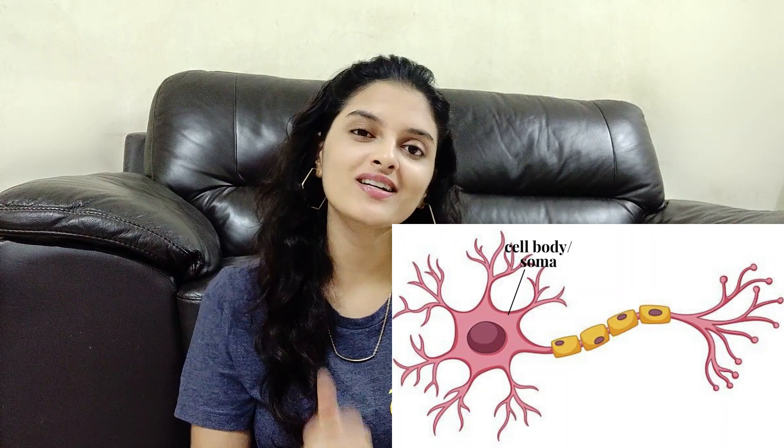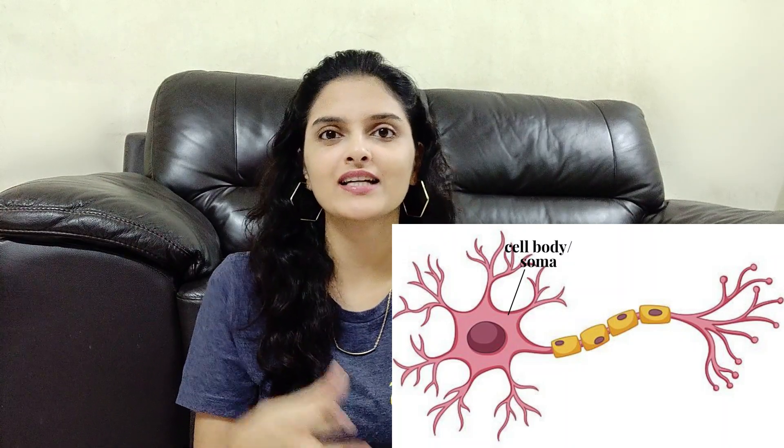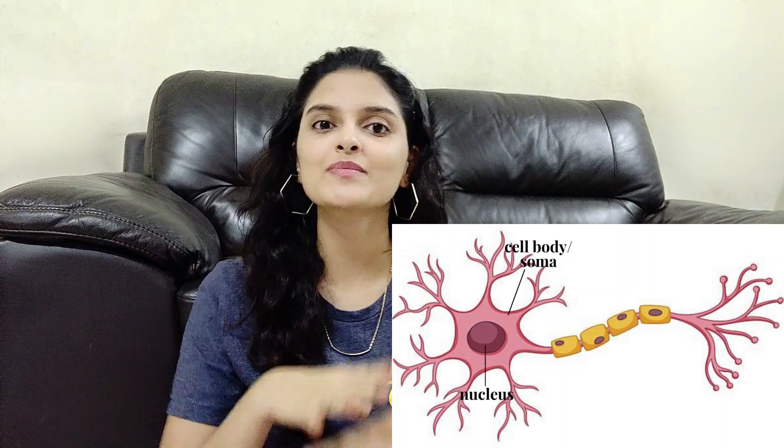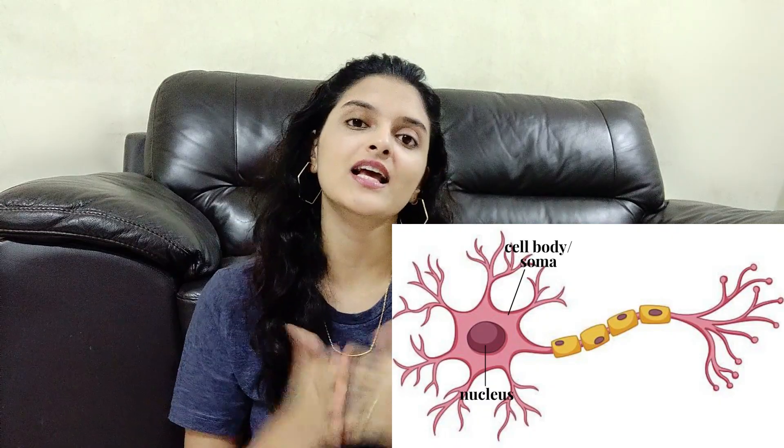First is the cell body or soma. Second is the dendrites. Third is the axon, and the fourth is the synaptic terminal. The cell body or soma is the part of the cell that contains the nucleus and it keeps the entire cell alive and functioning. This is the place where the neuron makes the decision of whether to send a signal or a message to the other neurons it is connected to.